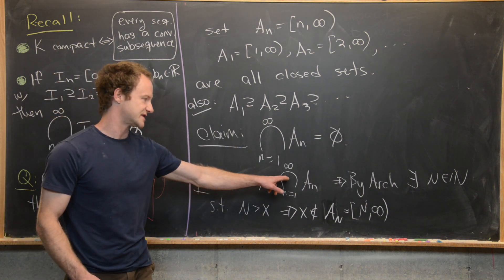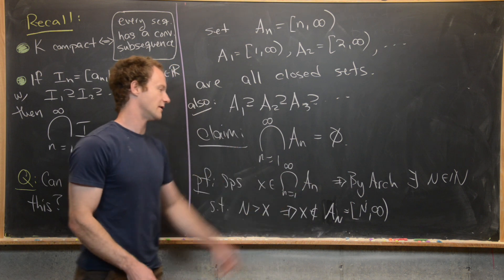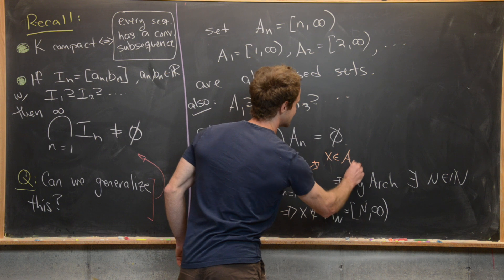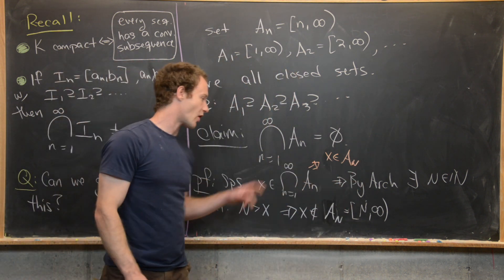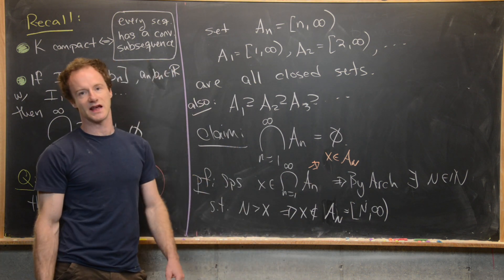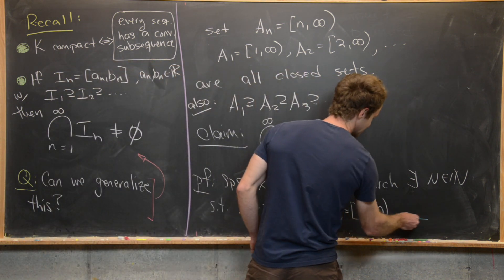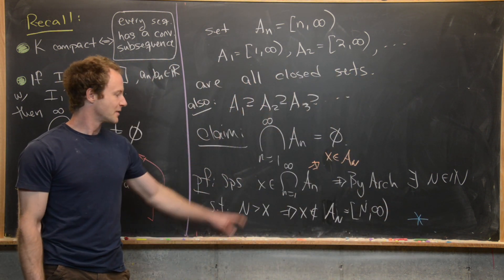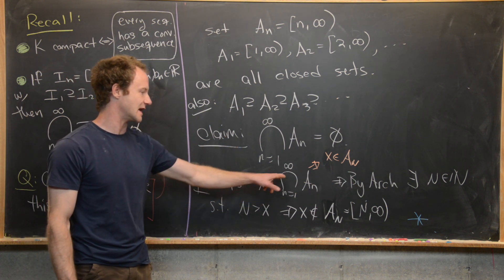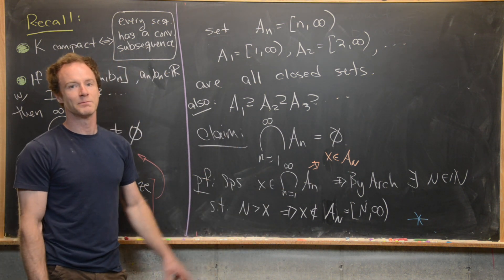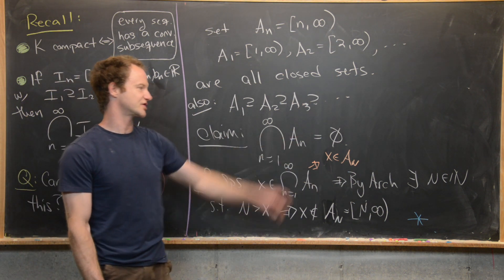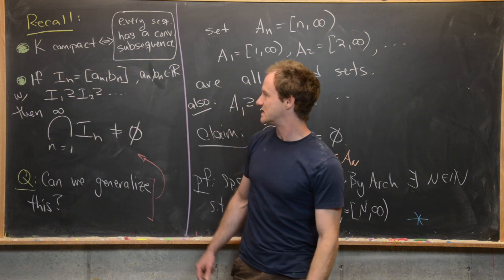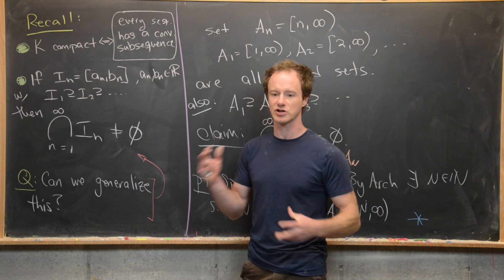We have x in the intersection, which tells us it's in all of these sets — in other words x is in A_N. But then by the Archimedean principle we have x is not in A_N. Those two things are mutually exclusive, so we have reached a contradiction. We're contradicting the possibility of there being an element in this intersection, so this intersection must be empty.